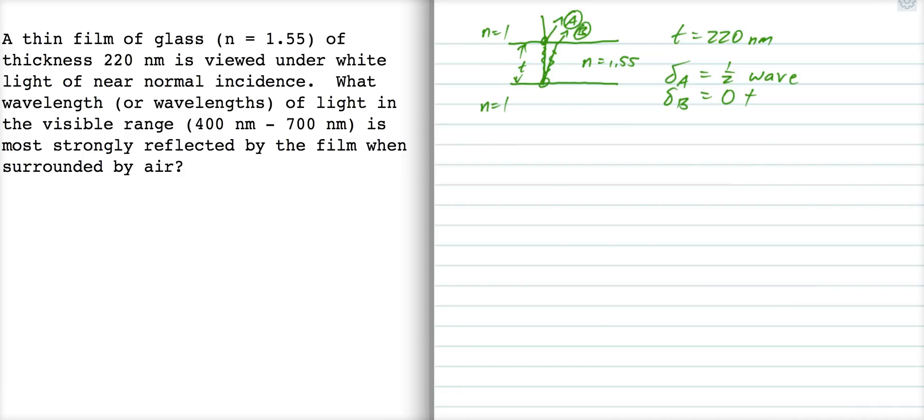But then, it covers a distance of 2T, and so the number of waves in the film is 2T over the wavelength in the film, which is 2T over lambda naught waves. Okay?